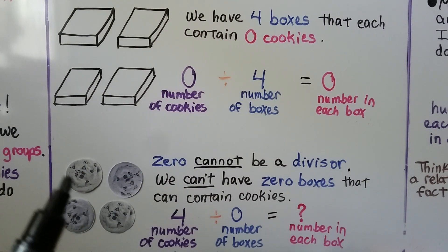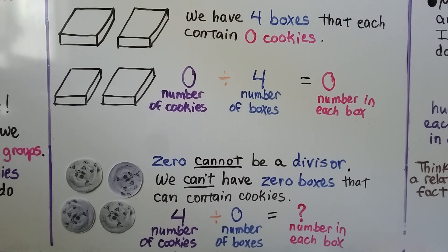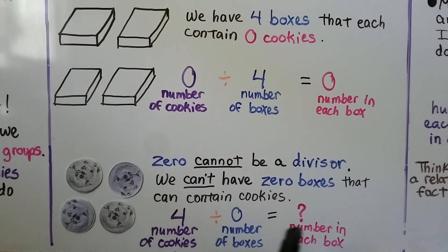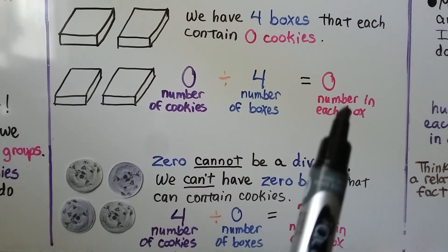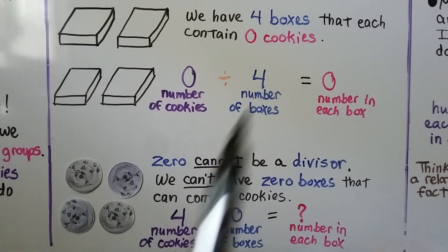Now we have 0 boxes. We have 4 cookies, but we have 0 boxes. Zero cannot be a divisor — it cannot be the divisor. We can't have 0 boxes that contain cookies. If we have 4 cookies and we don't have any boxes at all, we can't say how many are in each box. There's no boxes. So remember, 0 cannot be a divisor. It can be the dividend and it can be the quotient, but it can't be the divisor.